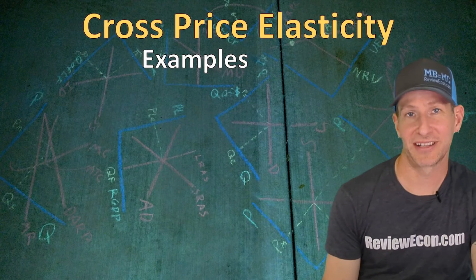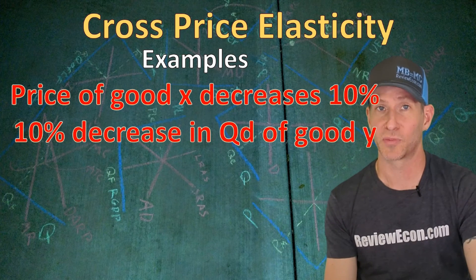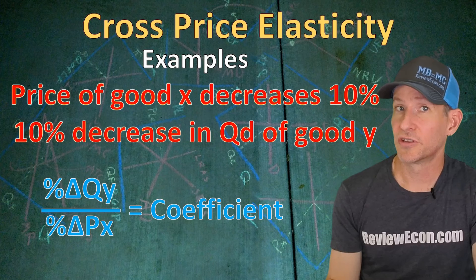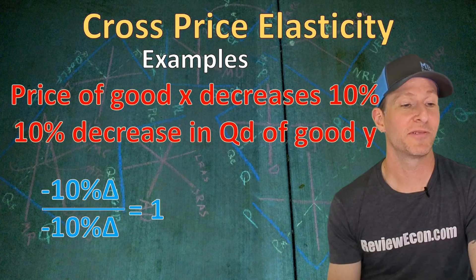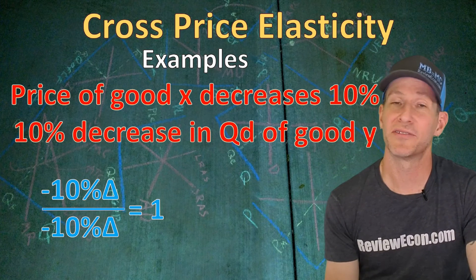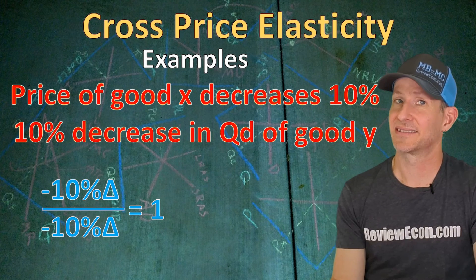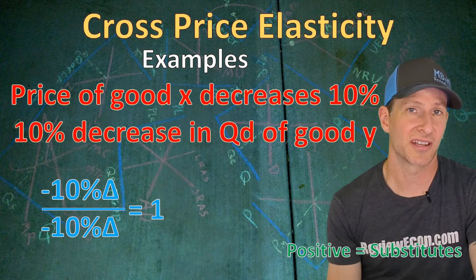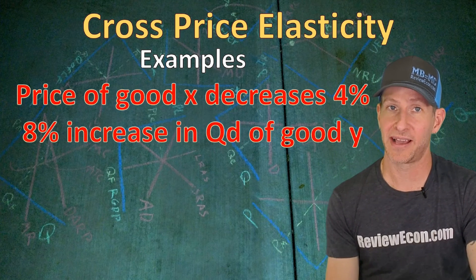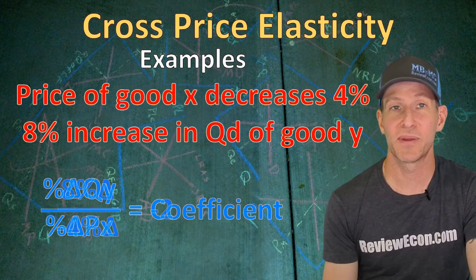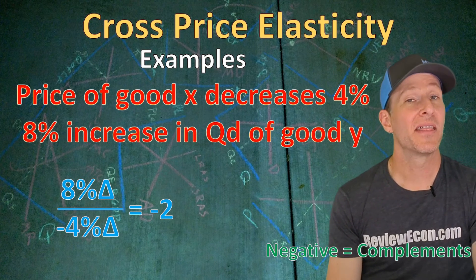Let's practice calculating cross price elasticity. If the price of good X decreases by 10% and that causes a 10% decrease in the quantity demanded of good Y, we plug the numbers into the formula. Remember, quantity is always on top. The negative 10% change in quantity of one good divided by the negative 10% change in the price of the other good gives a cross price elasticity coefficient of 1. Since it's positive, these goods are substitutes. If the price of good X decreases by 4% and that causes an 8% increase in the quantity demanded for good Y, the cross price elasticity coefficient is negative 2, so these goods are complementary.